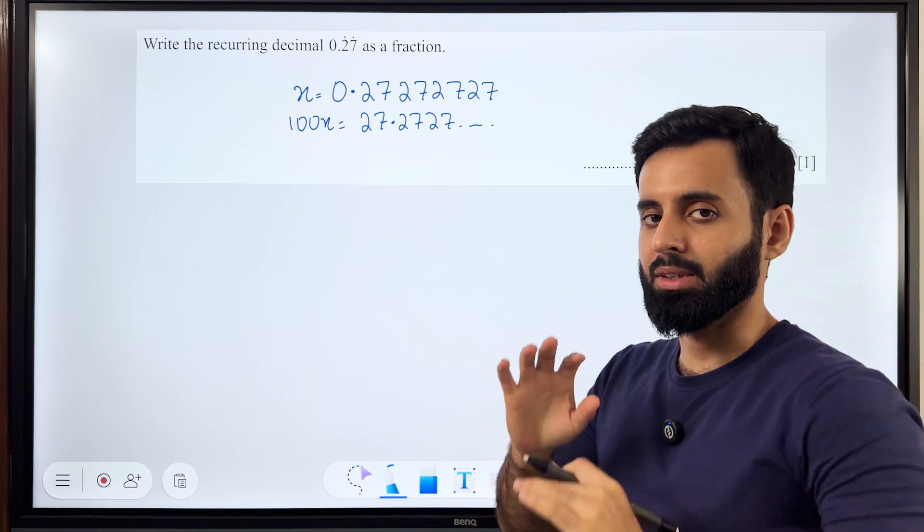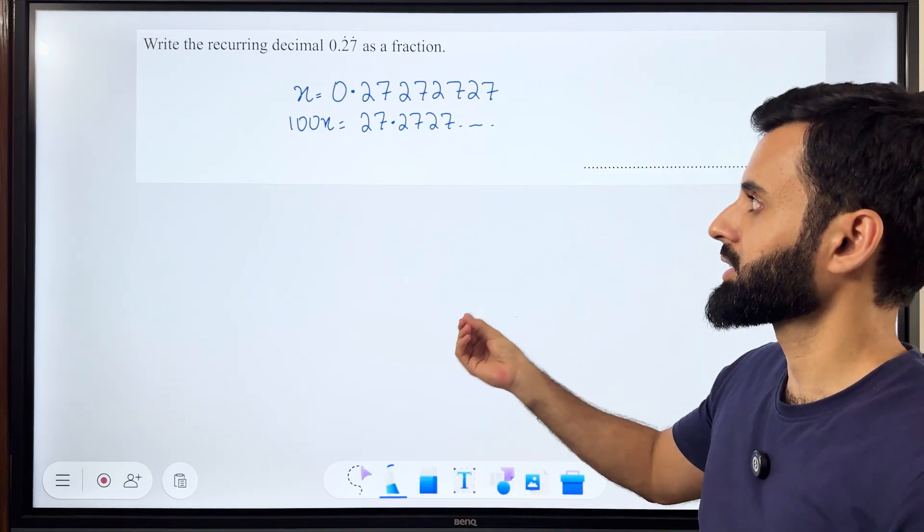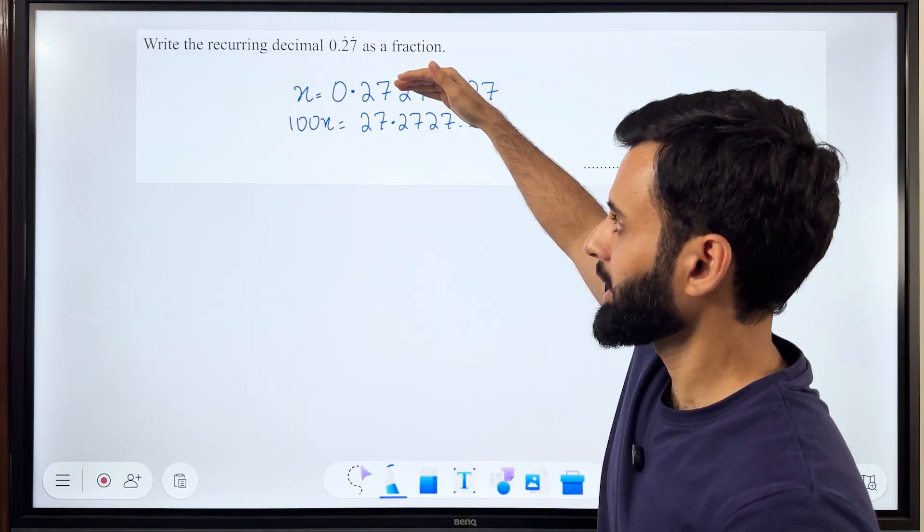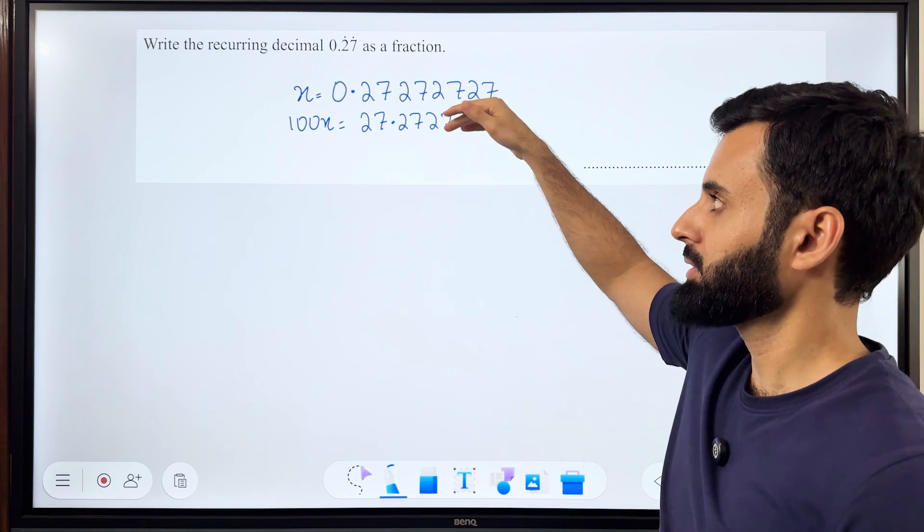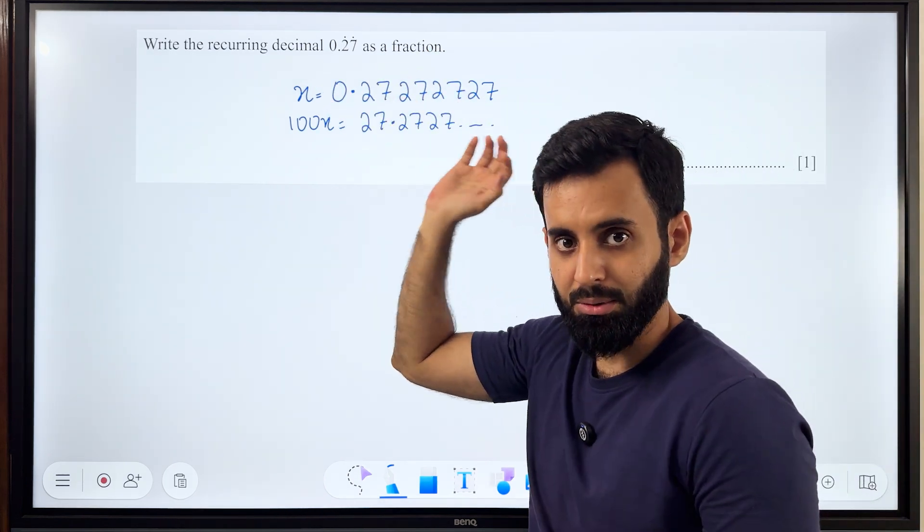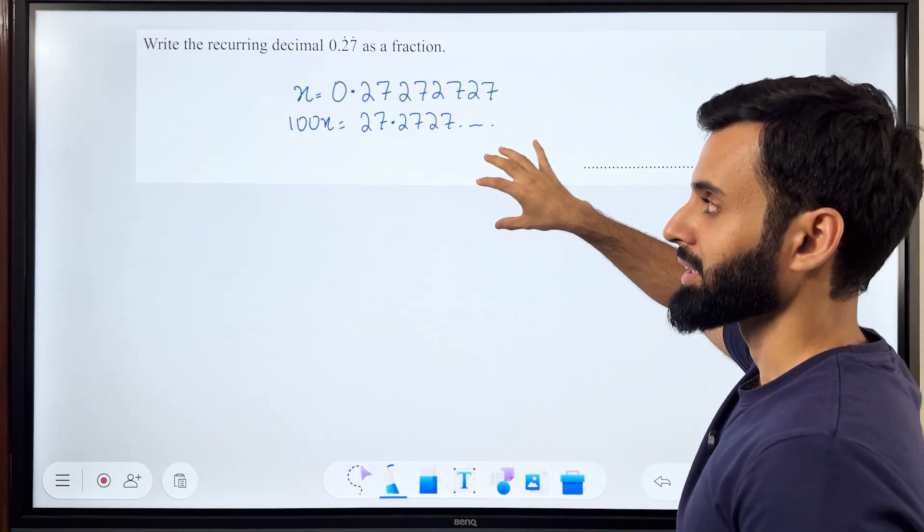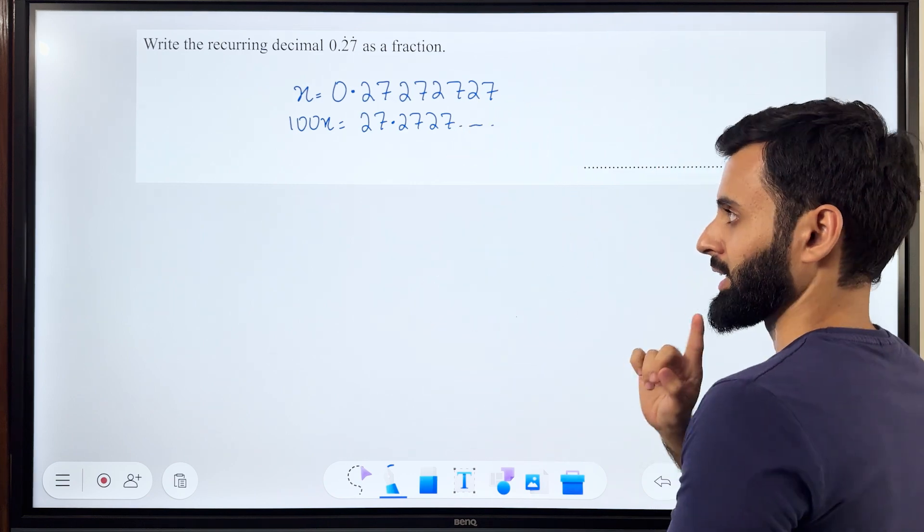Pause and think for, I mean not literally, but let's stop and think for a second what will happen if I subtract the two numbers. 27.272727 minus 0.272727 means that the recurring pattern will be eliminated. So that's what I'm going to do.